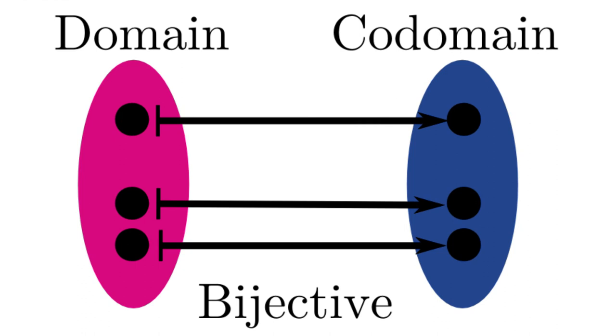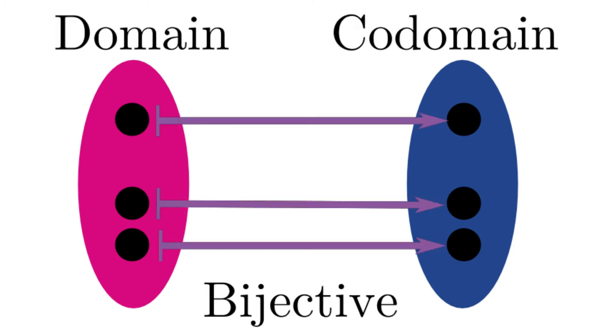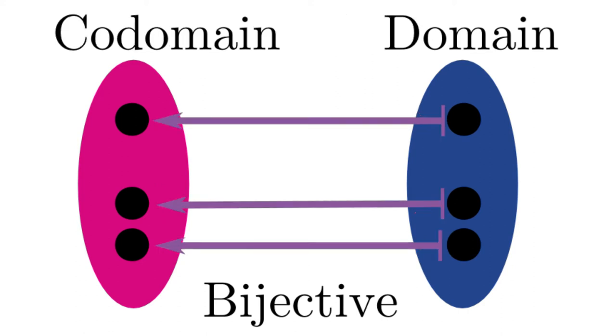If a function is both injective and surjective, then we call it bijective. Bijective functions can go both ways. Each bijective function has an inversion. A function from the codomain back to the domain, which undoes the original function.